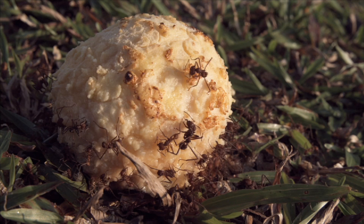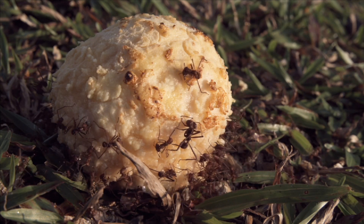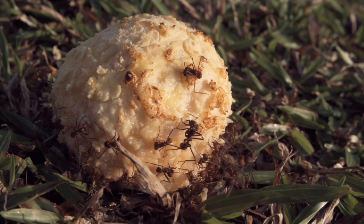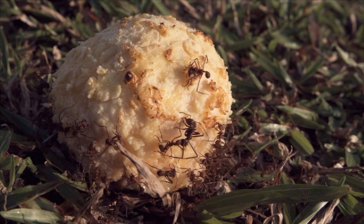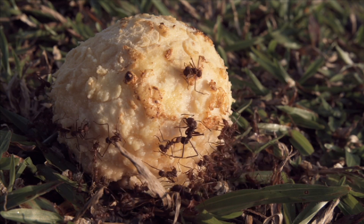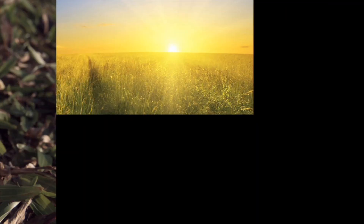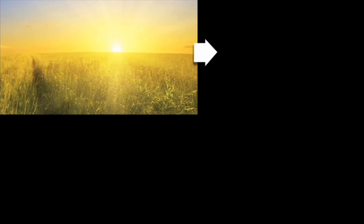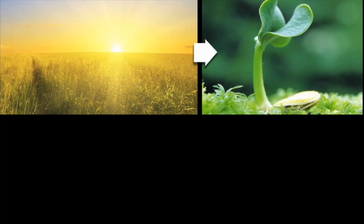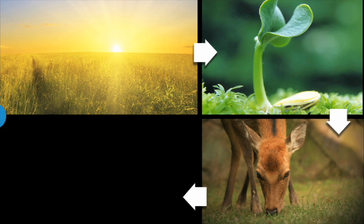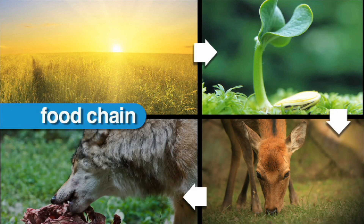Decomposers, like all living things, get energy from food. To better understand how living things get energy, we use a food chain. A food chain shows the relationship between the plants and animals in an ecosystem.